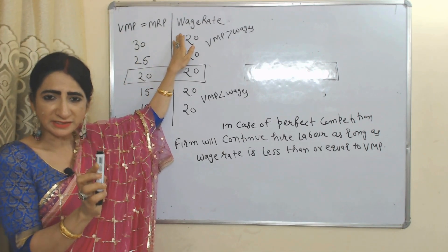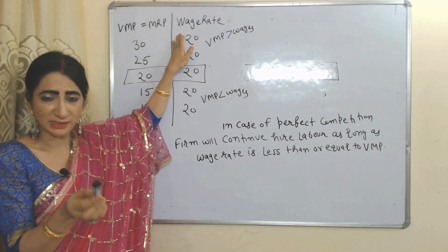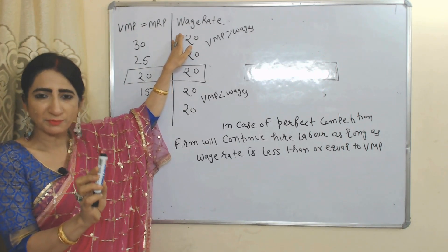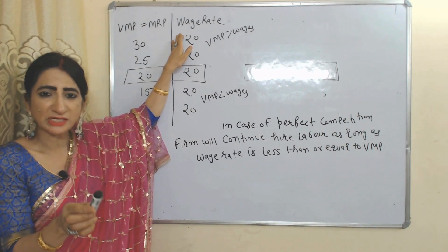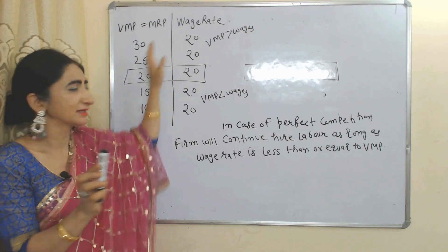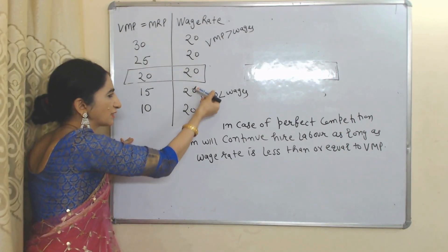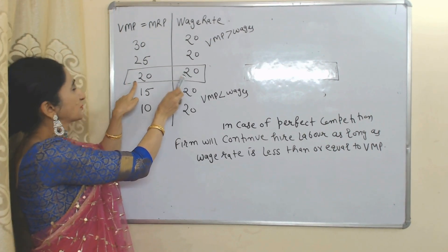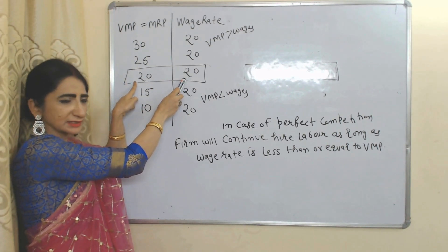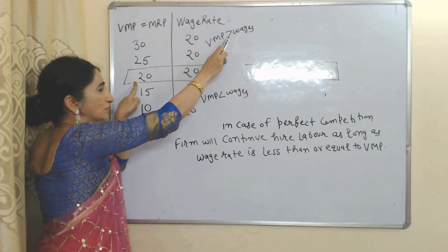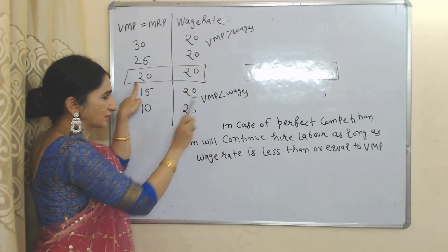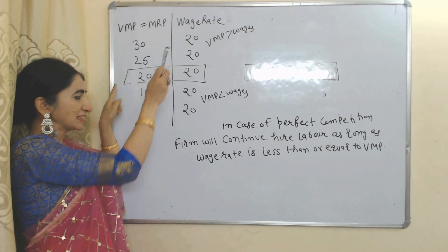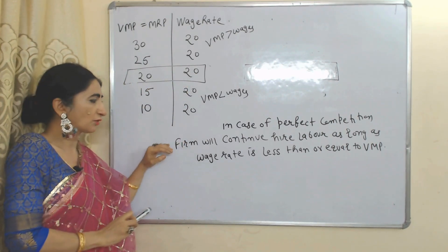The first column shows VMP which equals MRP; the second column shows wage rate. Wage rate is the price of input — as we know, labor is our input and its price is the wage rate. Under perfect competition, wages remain constant because the firm is a price taker. Here you can see wages are constant. This point will be called the equilibrium point because at this point VMP equals the wage rate.